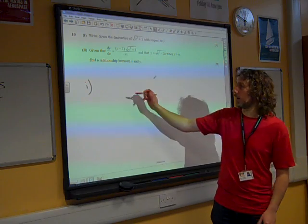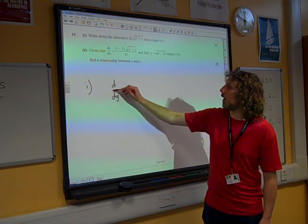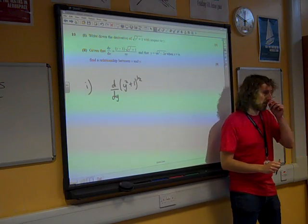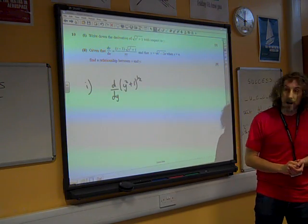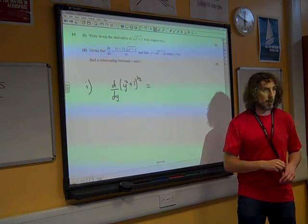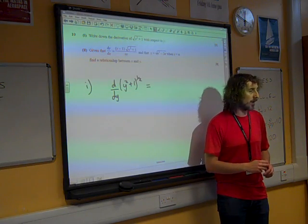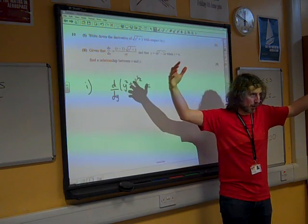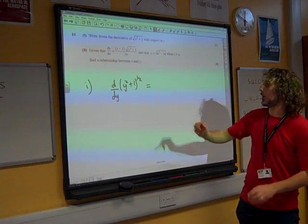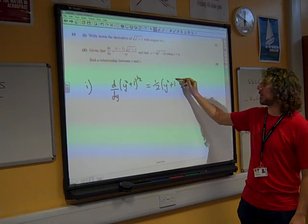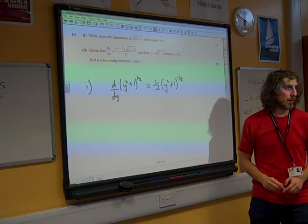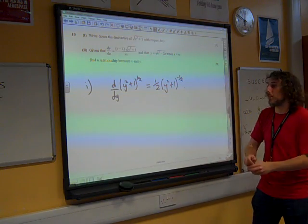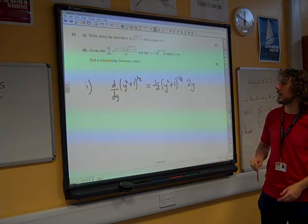Write down the derivative of that. So we're differentiating with respect to y, y squared plus 1 to the power of a half. It's easier to think in powers than with the square root sign. It's a core three chain rule question. It's big bear, something to the power of a half, the whole thing, which would be differentiated at half y squared plus 1 to the minus a half times by the derivative of the inside bit, which is y squared plus 1, differentiating that and we get 2y.